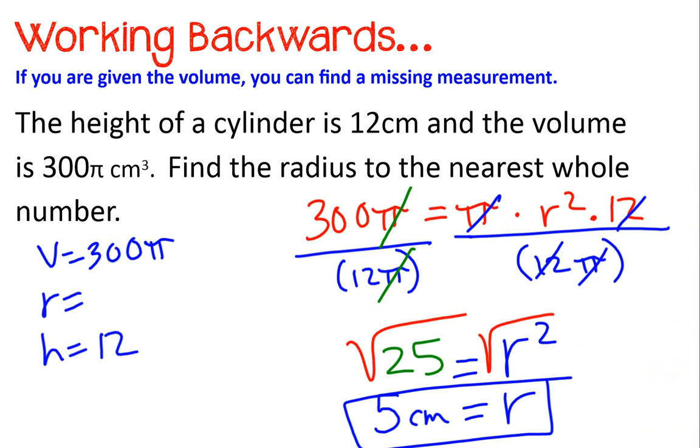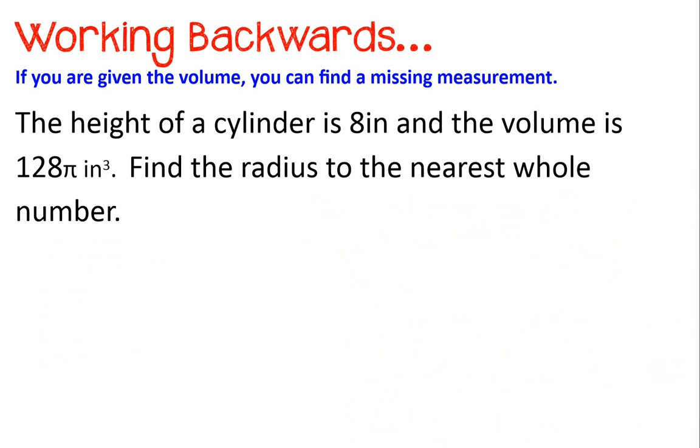Take a look at one more together. The height of a cylinder is 8 inches, the volume is 128 pi. Find the radius to the nearest whole number. I bet you don't even need to take notes anymore. 128 is the volume. The radius squared we don't know. The height is 8. Do you know what goes underneath here? Yep, the quantity 8 pi.